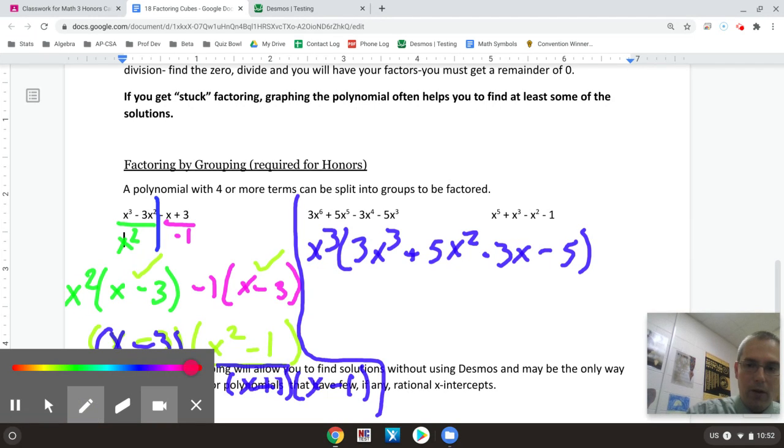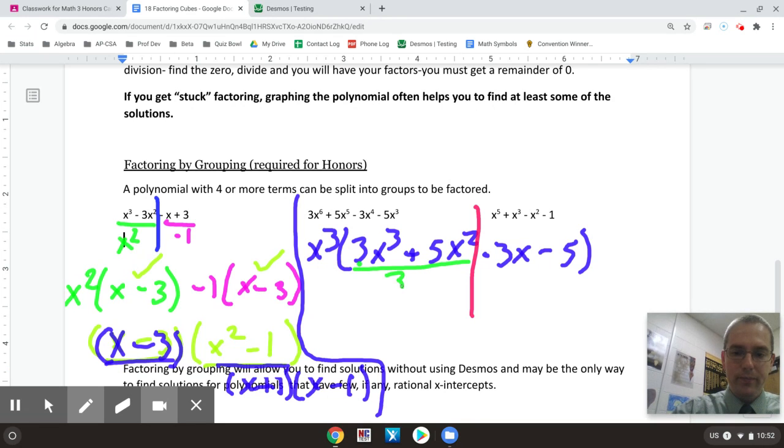So I'm going to go ahead and split it apart right down the middle. And I'm going to say, OK, now what will divide out of this front part? Well, out of this front part, I can divide out a three x squared, which is going to give me a three x squared and then an x plus five.